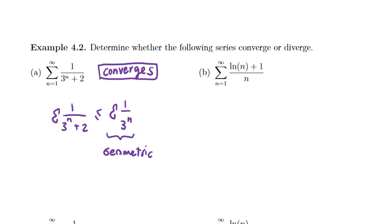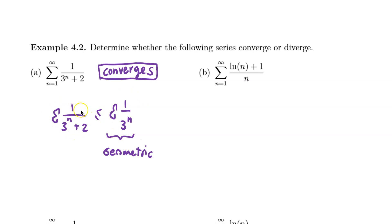Notice that the comparison test can tell whether a series converges or diverges, but it will not tell us its exact value. For this series we can use the geometric series formula to find the exact value, but for 1/(3^n + 2) we only know that it converges because the bigger series converges.